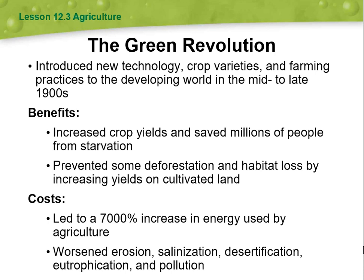The green revolution introduced new technology, crop varieties, and farming practices to the developing world in the mid to late 1900s. The benefits included increased crop yields that saved millions of people from starvation, and it prevented some deforestation and habitat loss by increasing yields on cultivated land. However, the costs included a 7,000% increase in energy used by agriculture.